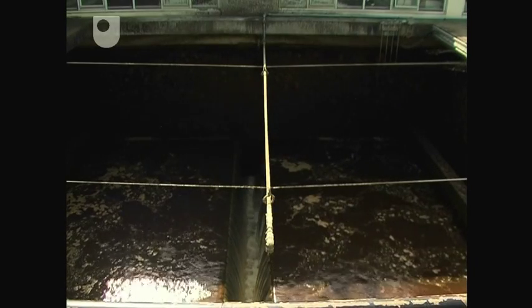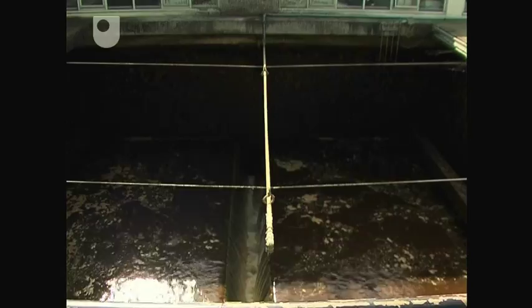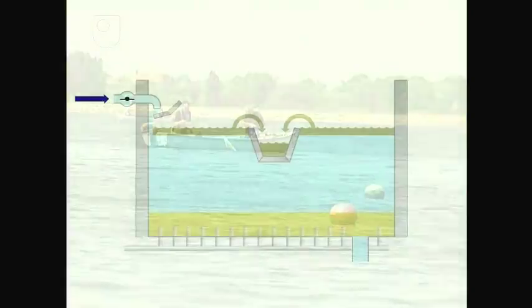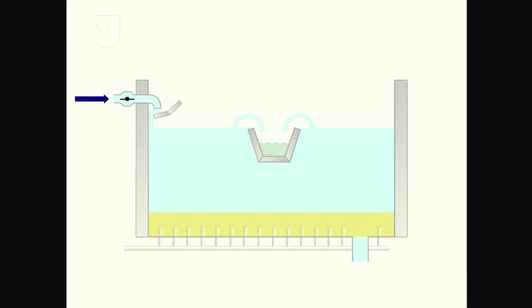The dirty water is sent to lagoons where the solids again settle out and once more the supernatant flows back to the reservoir. Once the outflow is seen to be clean, the backwashing cycle is terminated. The tank is filled and filtration begins again.